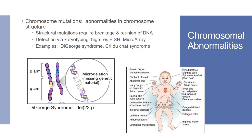DiGeorge syndrome is caused by a deletion on the Q arm of chromosome 22. Under the image of the chromosome, you'll see DEL and then 22Q in parentheses, which represents the deletion on the Q arm of chromosome 22.